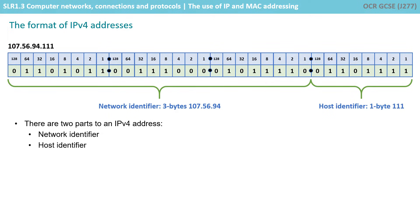There are two parts to every IP address. The first part is used to identify the network the traffic needs to go to, and the second part identifies the specific host device within that network. In this example, the first three bytes — 107.56.94 — are set aside to represent the network, and the final byte, 111, is used to represent the host within the network. The split between network and host identifier doesn't always have to be made this way; it's just an example.